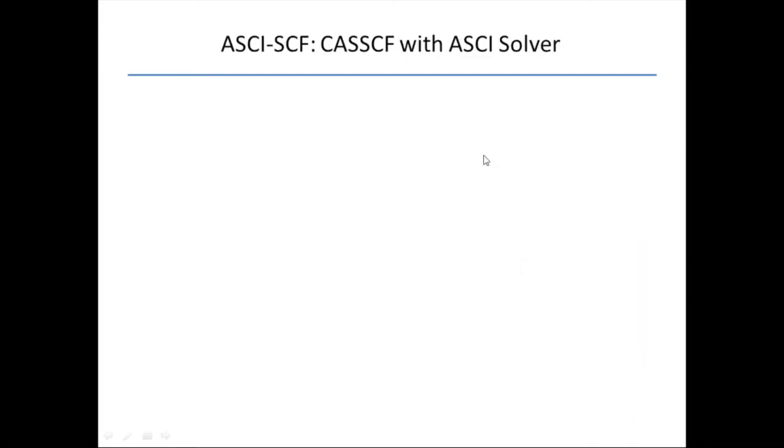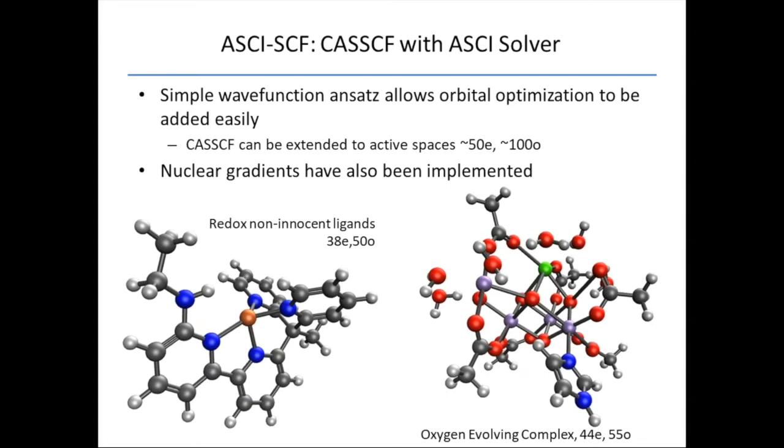Hopefully I've convinced you that ASCI is a useful full CI solver. We mentioned before CASSCF is full CI in an active space. So instead of doing full CI in your active space, you could do ASCI in the active space of your CAS calculation. This makes a method that I call ASCIISCF. The simple wave function ansatz allows us to do orbital optimization relatively straightforwardly. We can now do something like CASSCF, or at least CASSCF level accuracy, with about 50 electrons or even more in about 100 orbitals on a workstation or a cluster. This takes on the order of minutes to hours.